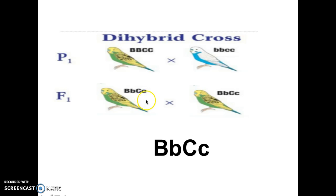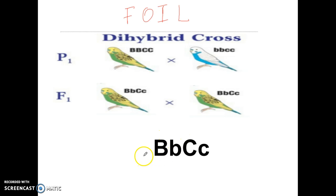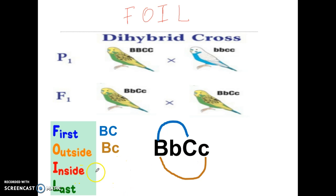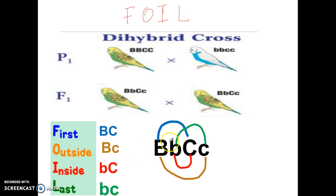The first step we're going to do when we figure out these problems is what we're going to call the FOIL method — First, Outside, Inside, and Last. You're going to be using the FOIL method a whole lot. You have to combine the alleles into separate gametes. So the first alleles are going to be big B and big C. The outsides are going to be big B and little c. The insides give you the two alleles on the inside. And last but not least, you have the last alleles, which is little b, little c.